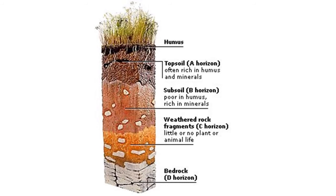When moving from top to bottom in the soil profile, the size of particles gradually increases. The bottom of the profile is bedrock. Subsoil is formed by the weathering of bedrock into small particles, and topsoil is formed by further weathering of particles in the subsoil. Roots of most plants spread in the topsoil, but roots of some large plants can penetrate into the subsoil layer.